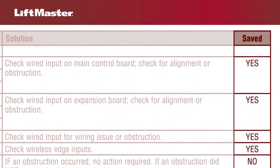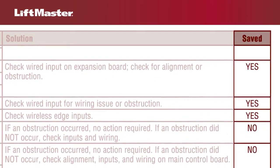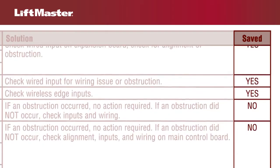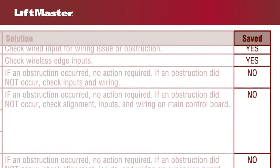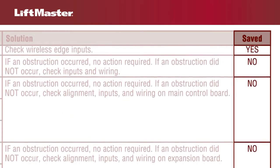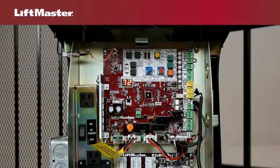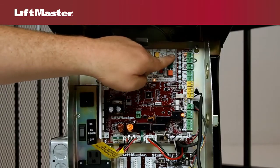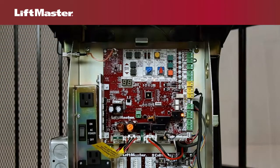Some codes are saved in the diagnostic code history and some are not. If a code is not saved, it will only appear on the display as long as the fault condition exists and then automatically clear. For example, code 72 can indicate an obstruction of the photo eye. This code is not saved when the fault condition is corrected.